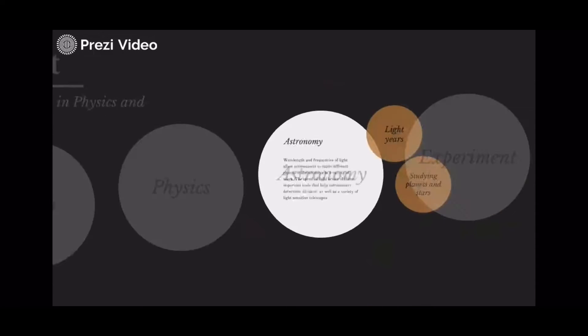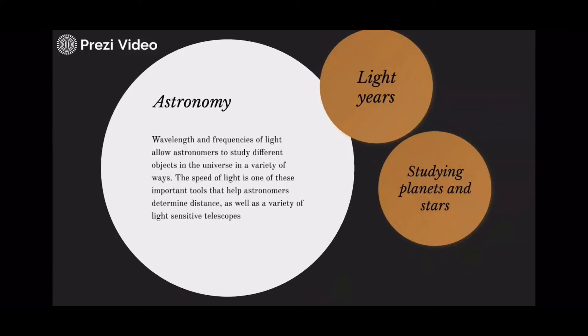Astronomy. Wavelength and frequencies of light allow astronomers to study different objects in the universe in a variety of ways. The speed of light is one of these important tools that help astronomers determine distance, as well as a variety of light-sensitive telescopes.